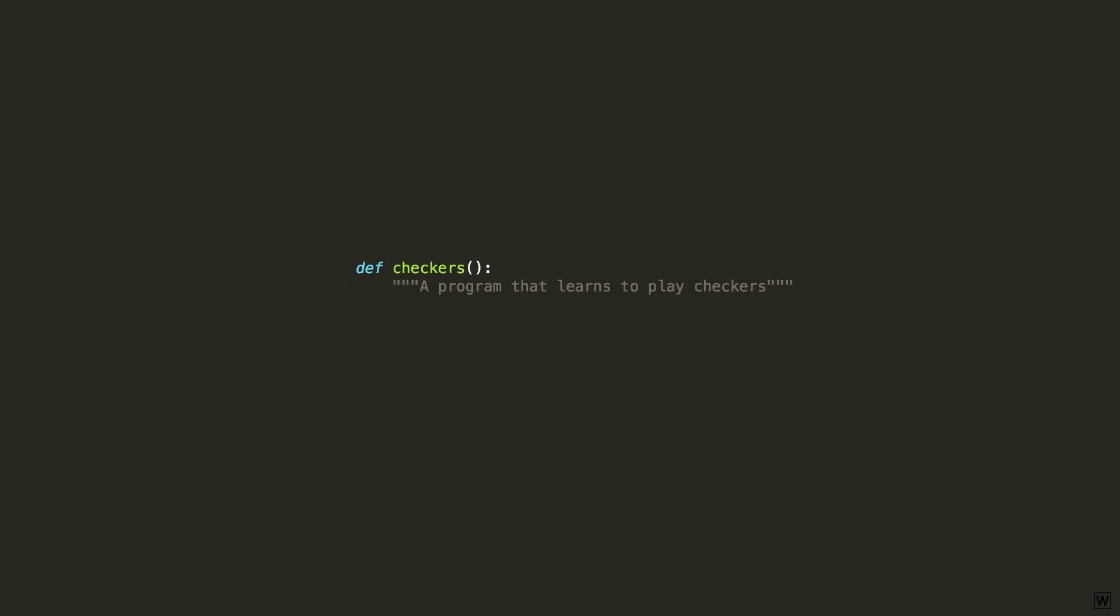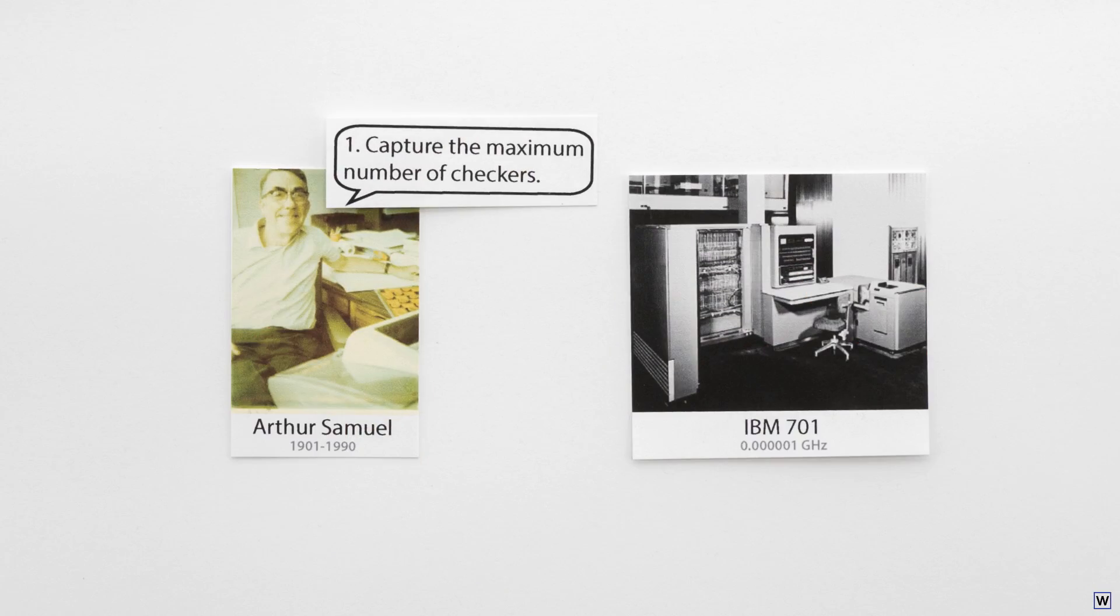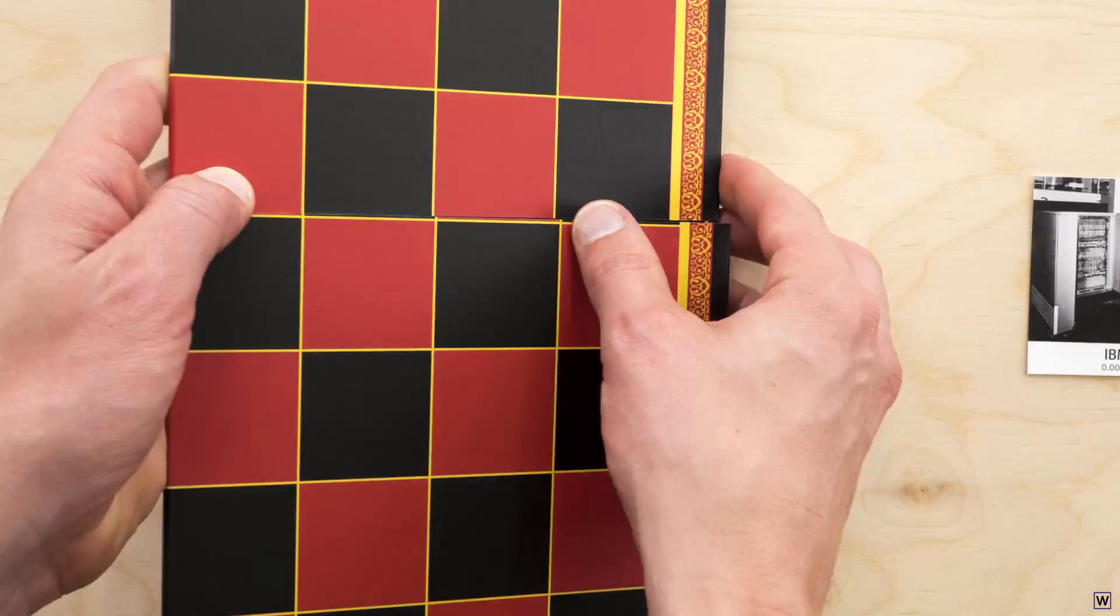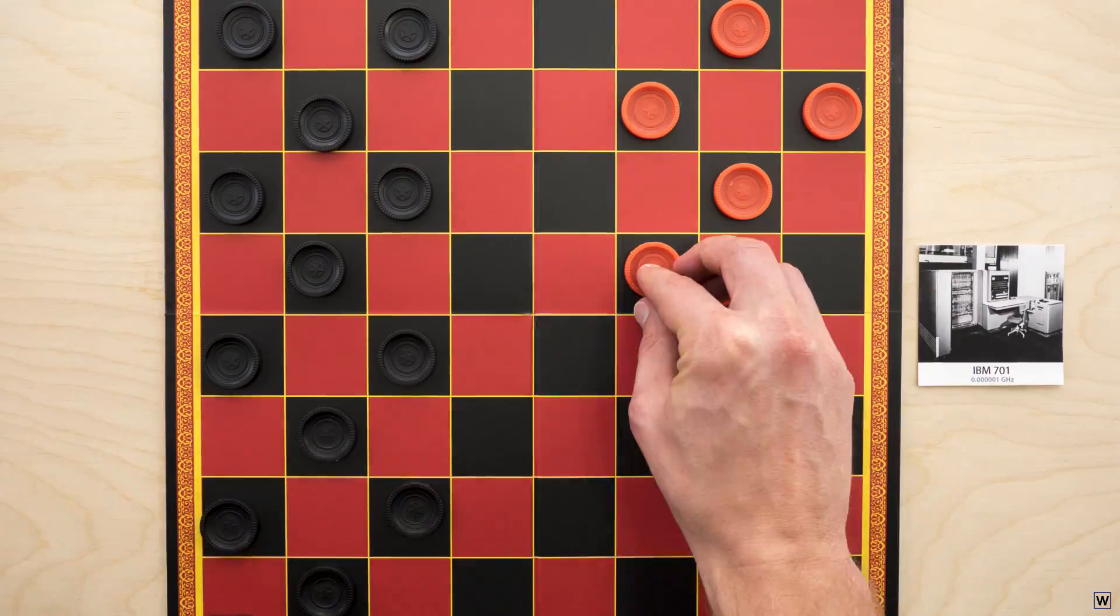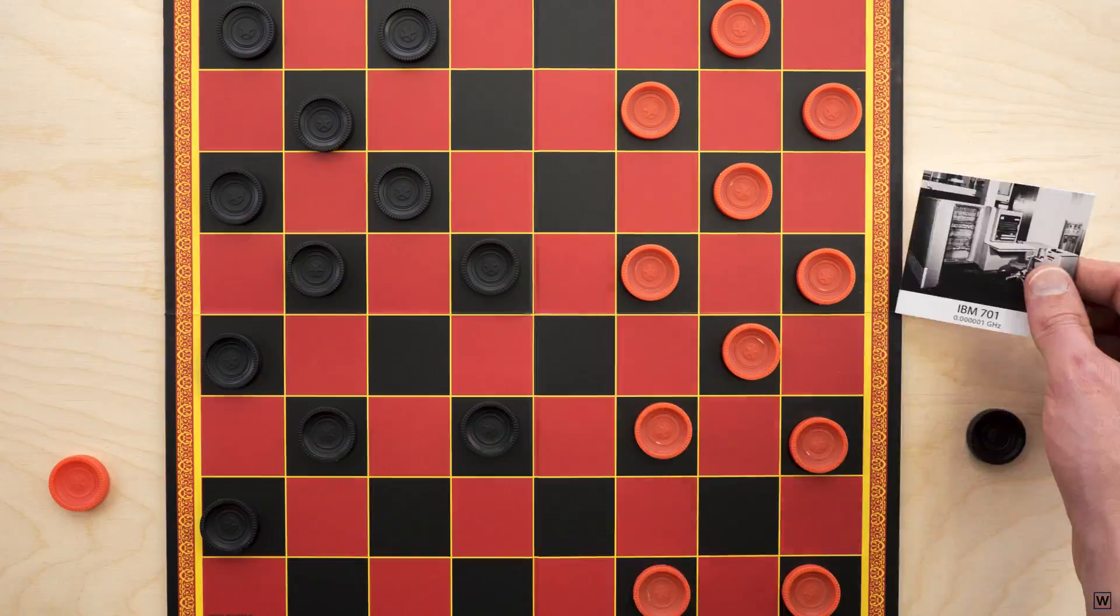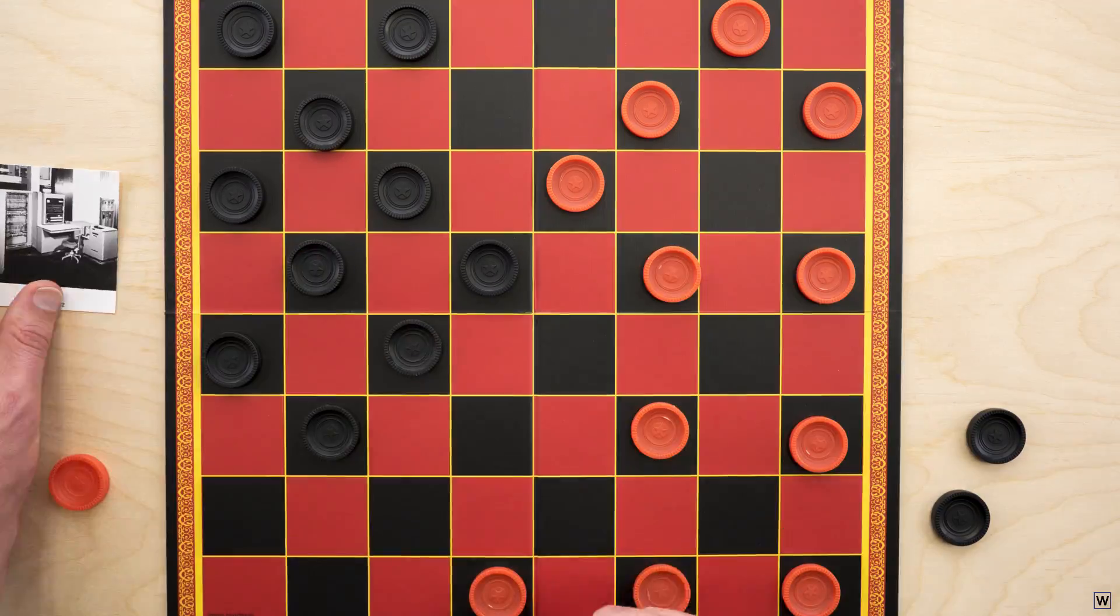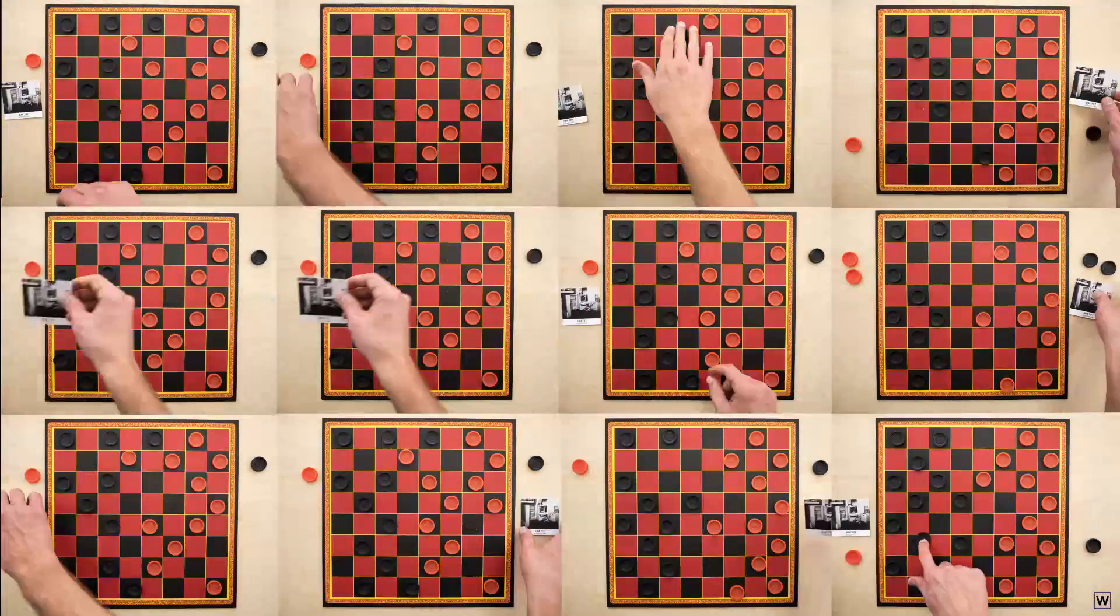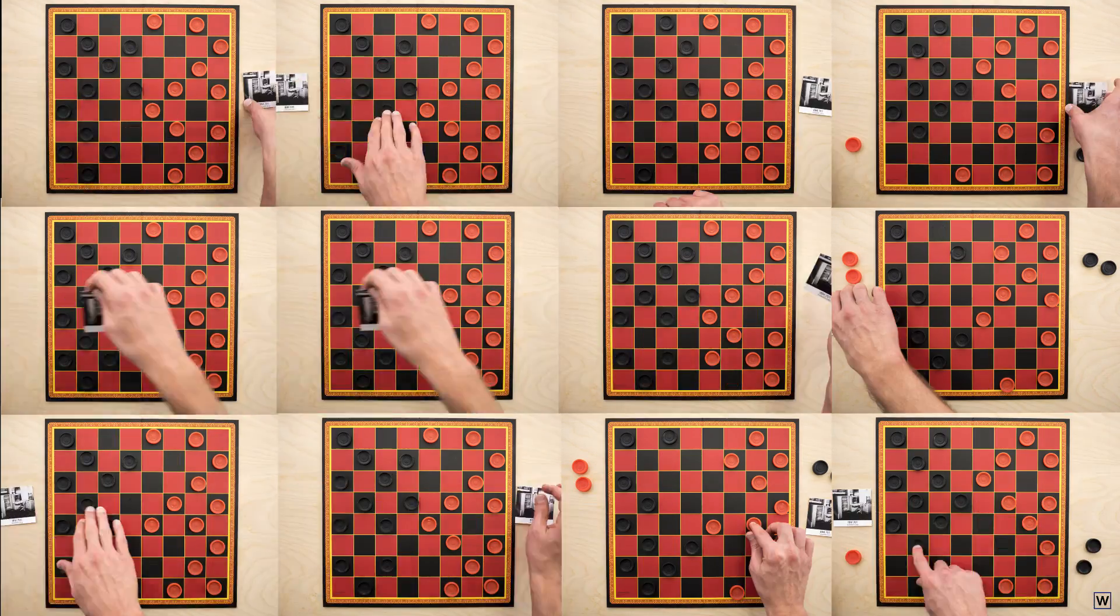The difference is powerful. Rather than spending his time coding up optimal checkers playing rules, Samuel allowed his program to find the best strategies by testing their performance on real games. Playing game after game against itself, his program made incremental improvements until it could compete with the very best players.